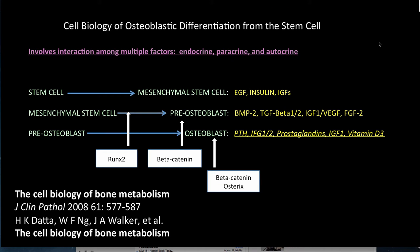Cell biology is what is driving all of this. Trying to understand the cell biology of the musculoskeletal system is like trying to play a sport on a moving playing field. This slide outlines the multiple factors — endocrine, paracrine, and autocrine — involved in the process of differentiation from the stem cell to the osteoblast. The steps are stem cell, mesenchymal stem cell, pre-osteoblast, and finally mature osteoblast. For each step, the factors that have been identified as controlling elements are listed adjacent to the step.